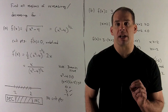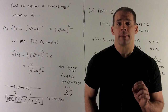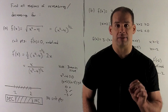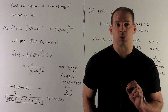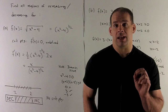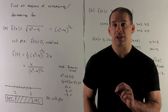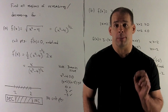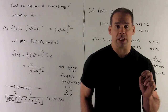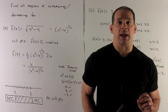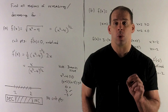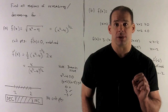Plugging 0 into x squared minus 4 gives minus 4, so we can't use the middle region between minus 2 and 2. Plugging in 3 gives 9 minus 4, which is positive, and plugging in minus 3 also gives 9 minus 4, which is positive. So we keep the outside regions. Our domain is x ≥ 2 or x ≤ -2.